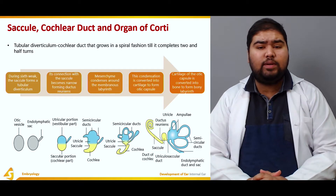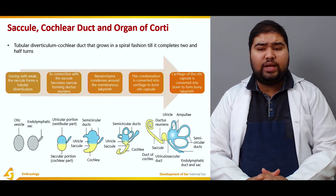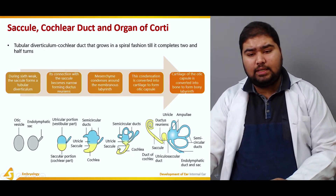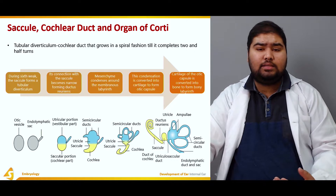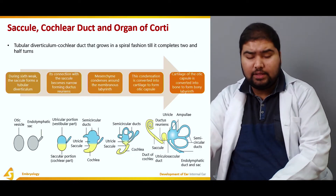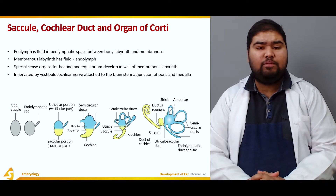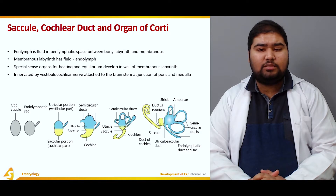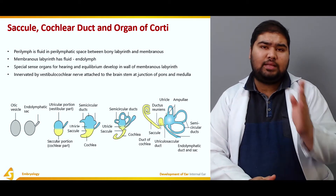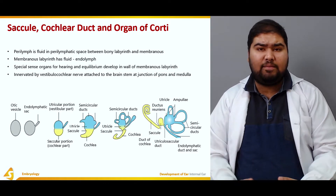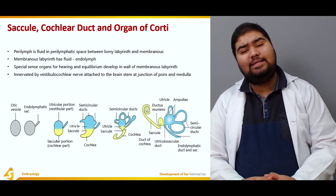The cochlear duct — this tubular diverticulum — grows in a spiral fashion until it completes two and a half turns, and is responsible for the production of the adult structures. The perilymph is the fluid in the perilymphatic space between the bony labyrinth and the membranous labyrinth. The perilymphatic space is filled by perilymph, while the membranous labyrinth itself contains fluid known as endolymph.